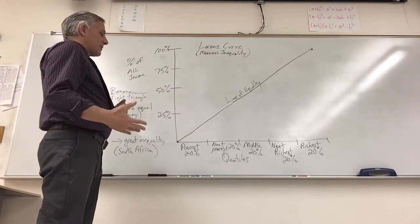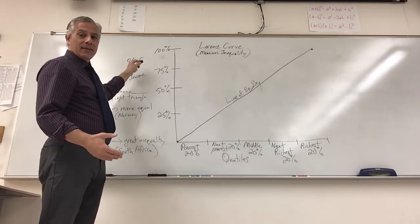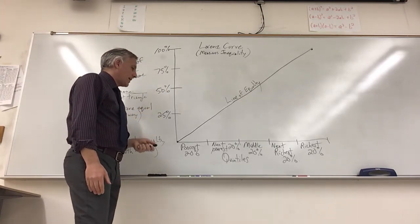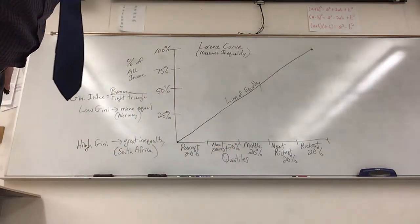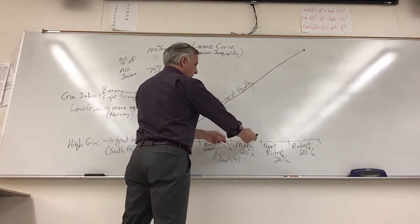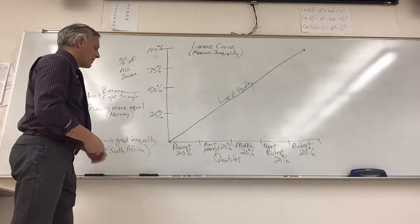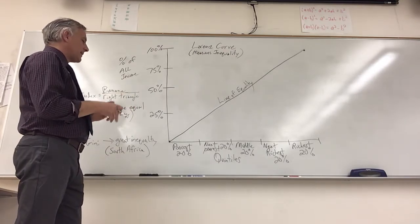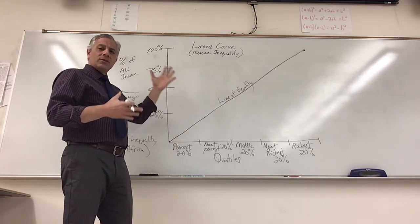This is an important social justice issue and we have this Lorenz curve. The hardest thing about this graph is knowing what's on the axis. This is the percent of all income on the vertical, and then we have what's called quintiles on the horizontal. We're breaking it into fifths: the poorest, next poorest, the middle, the second wealthiest, and then the richest are the last group. What we do is we take a look at how much of the income each group gets out of the total income of the United States or whatever country it is.